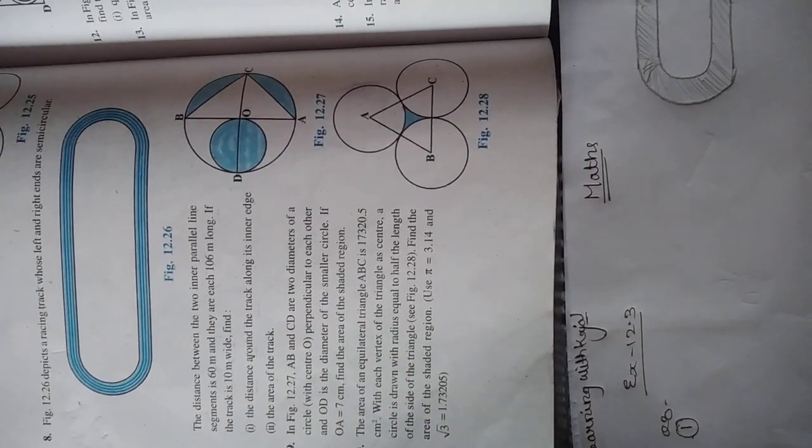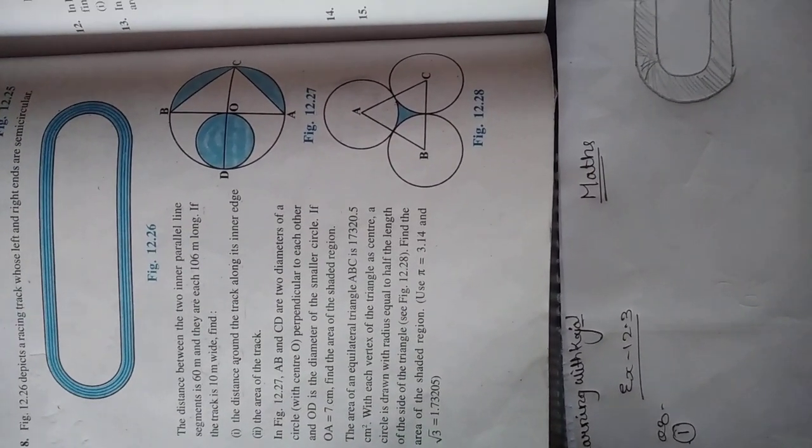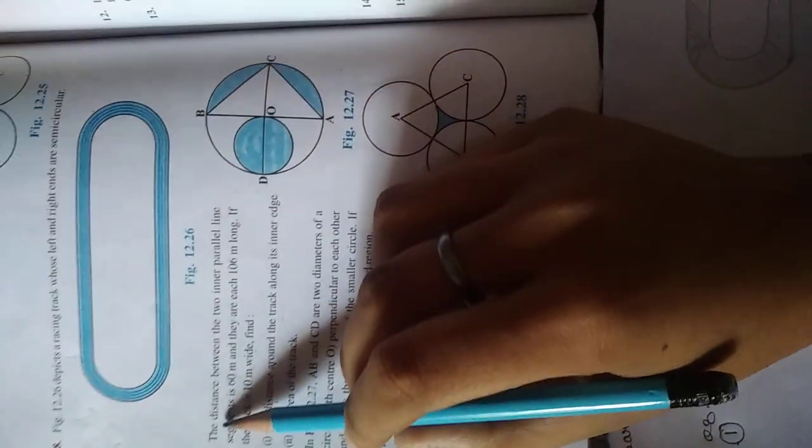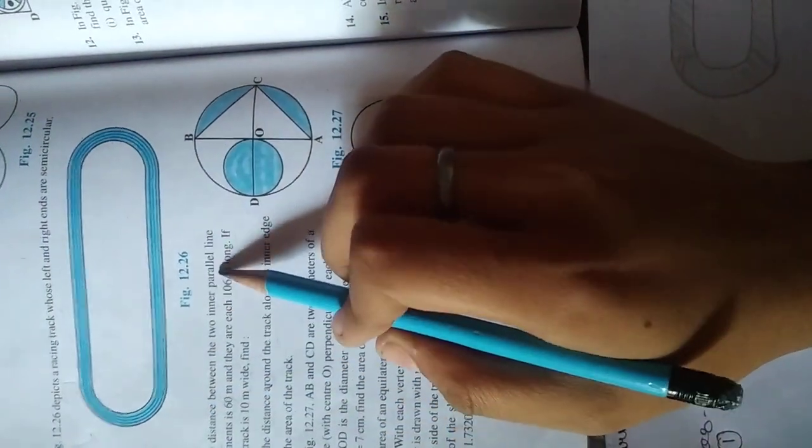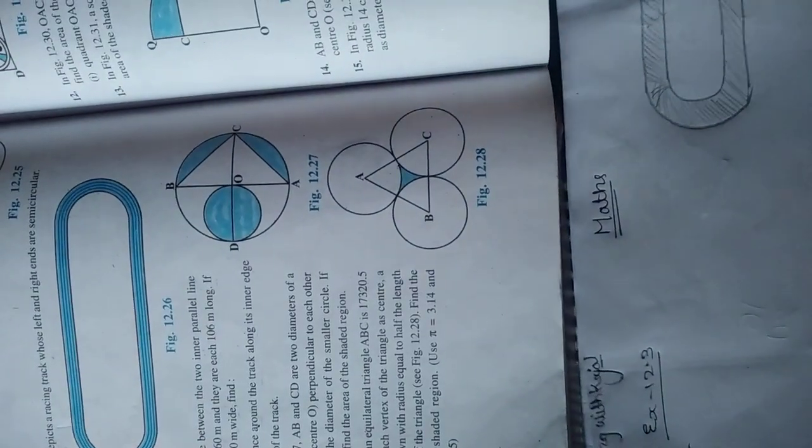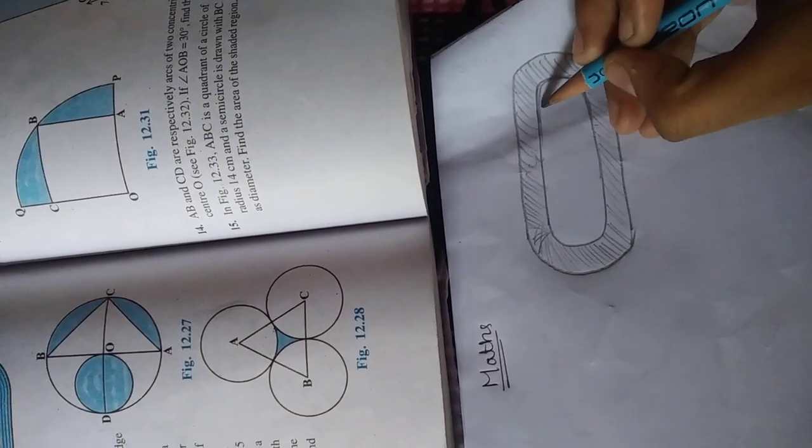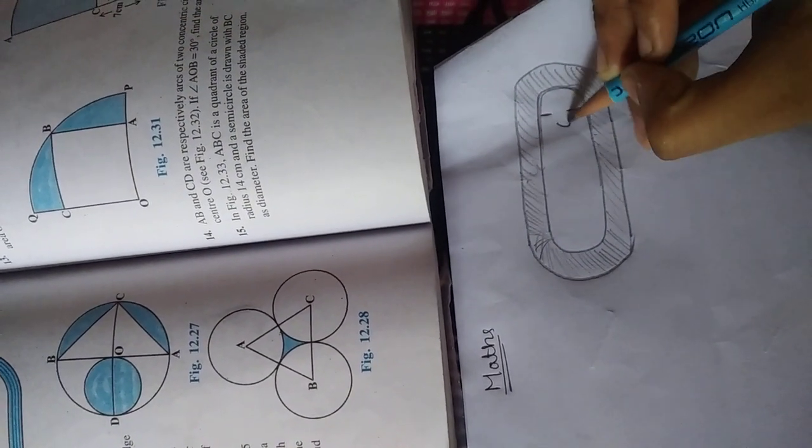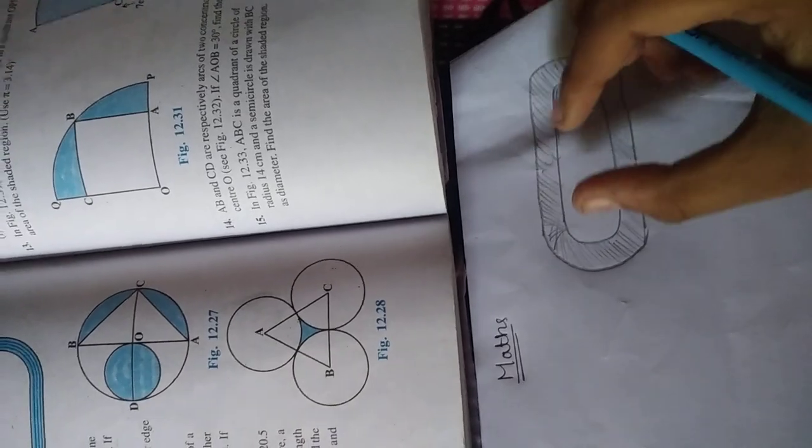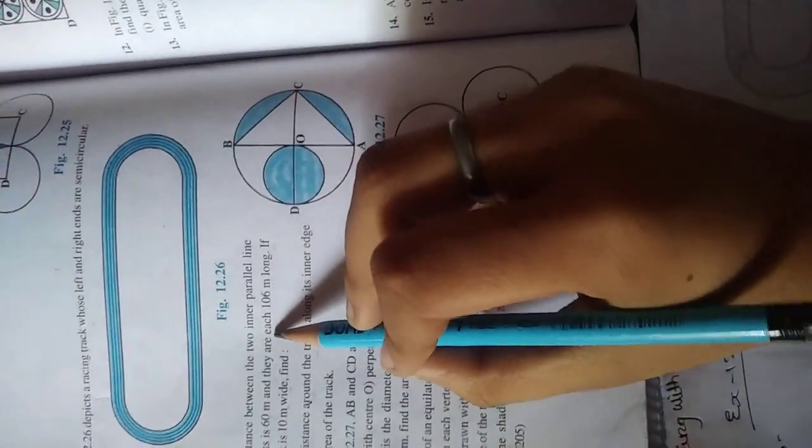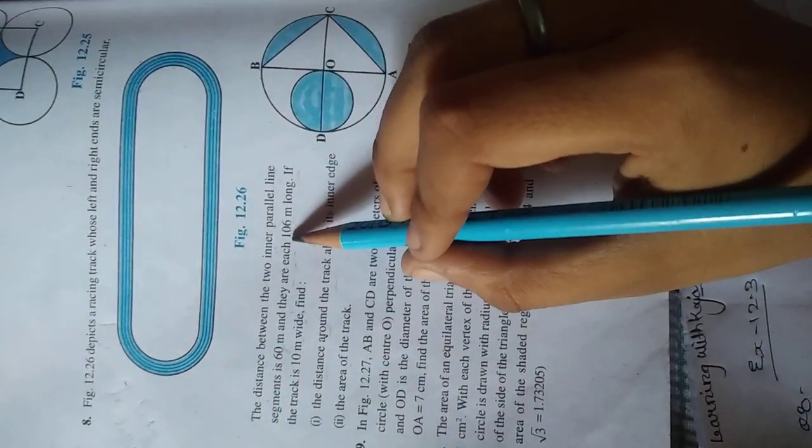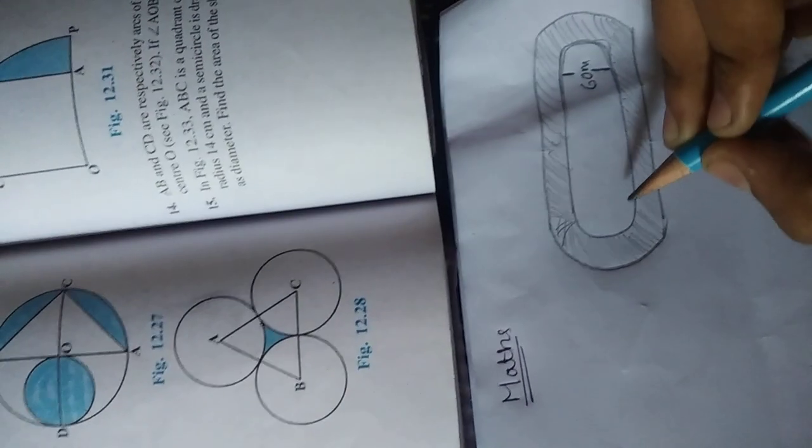Hello guys, today we start Class 10 math exercise 12.3 question number 8. The distance between the two inner parallel line segments is 60 meters. Let's see the diagram - these are two parallel lines with segments 60 meters apart. They are each 106 meters long.